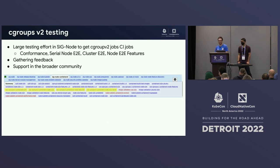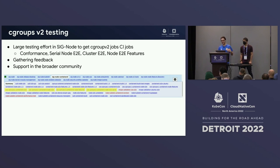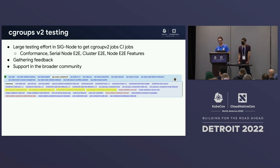As part of graduating cgroup V2 to GA, we tested extensively. SIG Node added new test jobs in open source to test all variants — conformance, serial node tests, cluster tests — running continuously against the latest containerd, RunC, and Kubelet. We also worked with the community to gather feedback and ensure different container runtimes are working well as cgroup V2 gets adopted broadly.